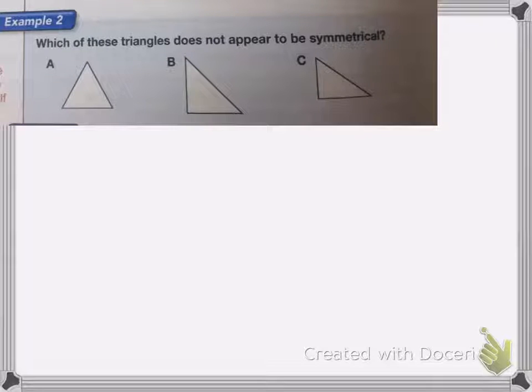I have these three triangles. It wants to know which one does not appear to be symmetrical. I want to just try to draw some lines of symmetry and see how many I can find. On A, I have at least one there, so it's not that one. On B, I have at least one line here.